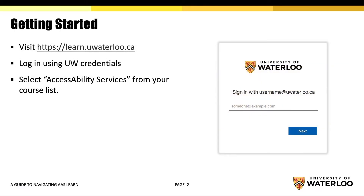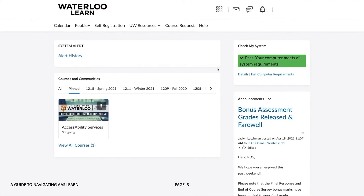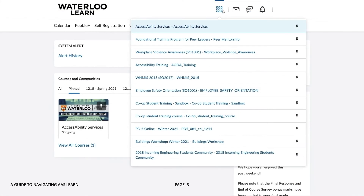To get started, visit learn.uwaterloo.ca, then log in using your UW credentials. After this, select Accessibility Services from your list of courses on Learn.